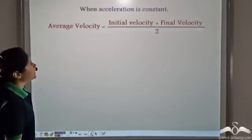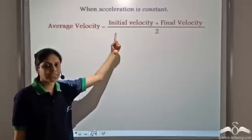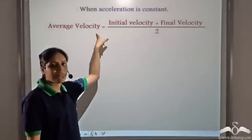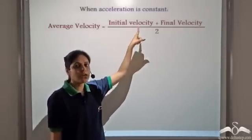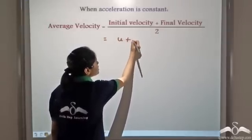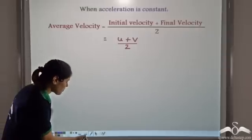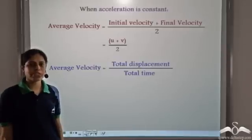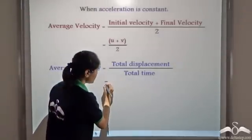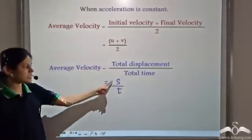Now we have learned that average velocity is equal to initial velocity plus final velocity by two. This is true when acceleration is constant, and since we have already assumed that acceleration is constant, so we can write average velocity is equal to u plus v by two. Average velocity can also be written as total displacement by total time, so that is s by t.